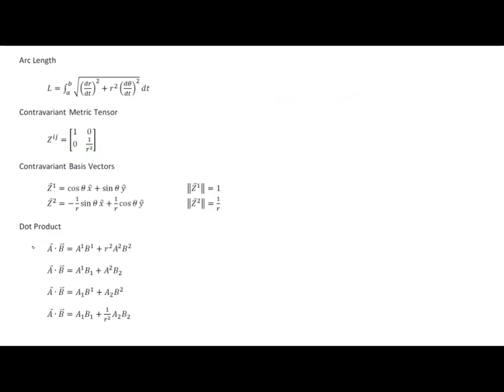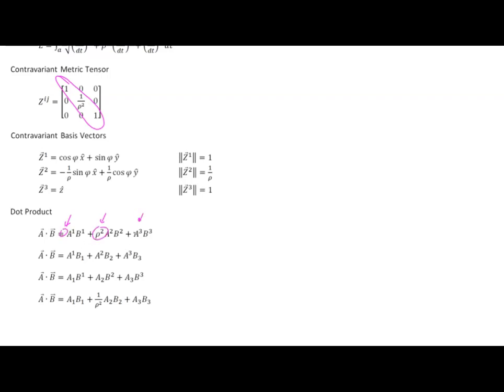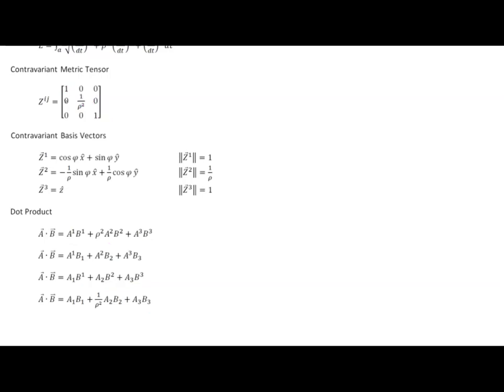Let's look now at cylindrical polar coordinates. Again, we have an orthogonal system, which means we have only diagonal elements in both metric tensors. So I'm not going to write down the results here — I'll just show you what it is, and you'll be able to connect the dots. We simply walk through the elements of the covariant metric tensor — 1, ρ squared, and 1 — and combine those with the appropriate vector components. This last form uses covariant components coupled with the contravariant metric tensor elements. There's really nothing more complicated to it than that.